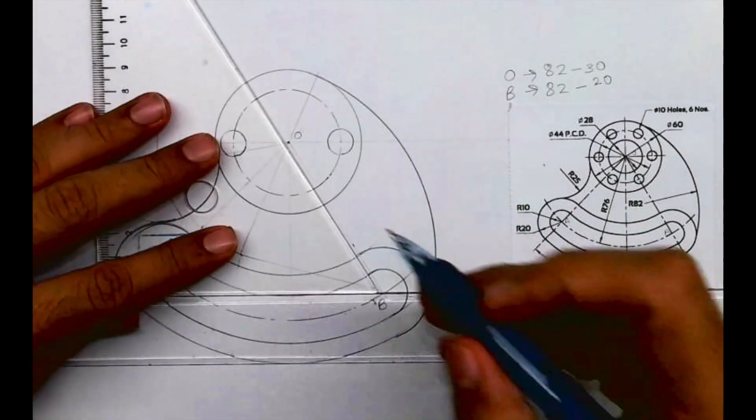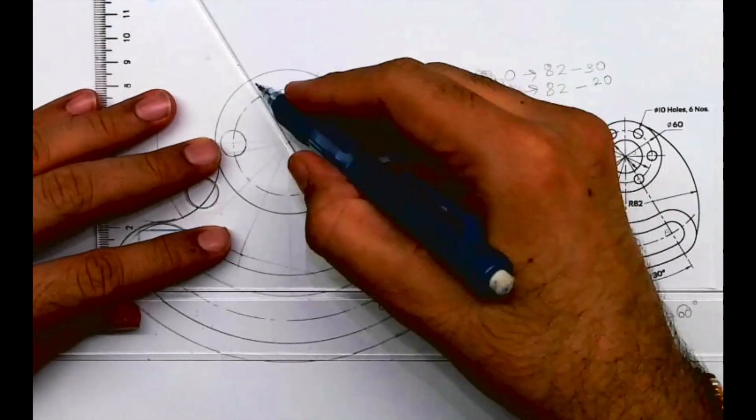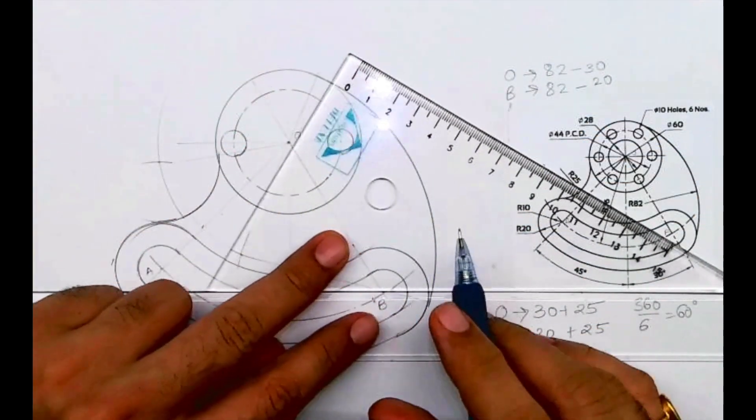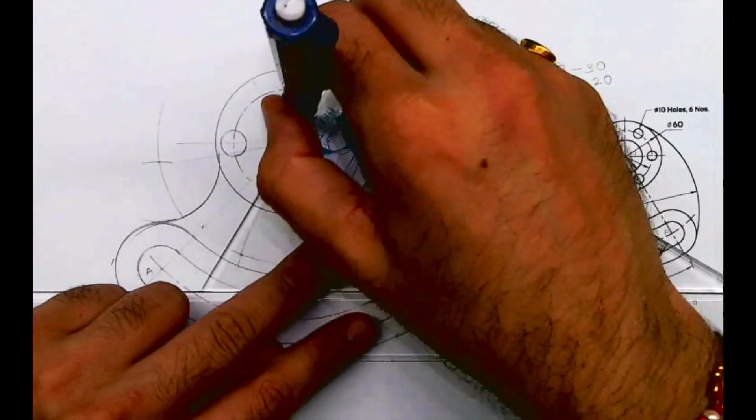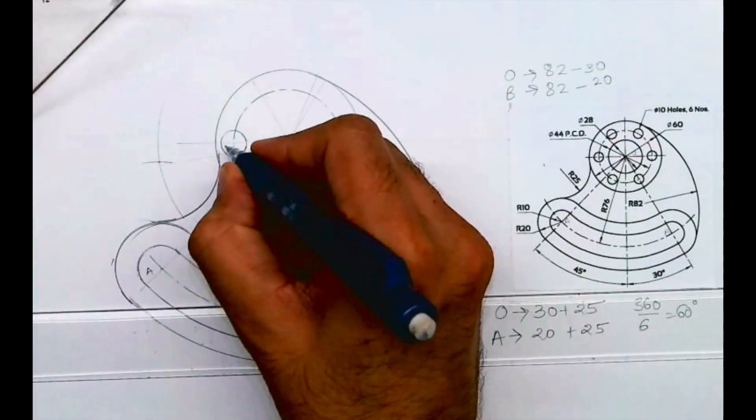See, we can take 60, 60 degree and we'll get the required points to draw the circle. And from those points we can draw circle.